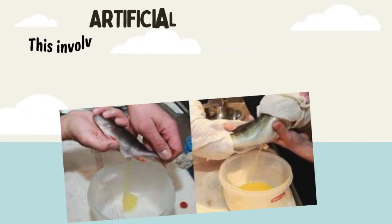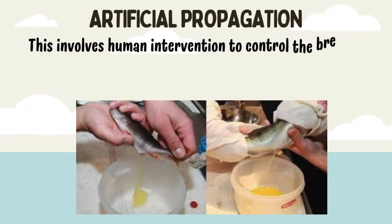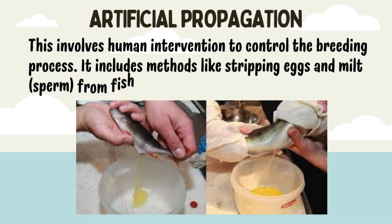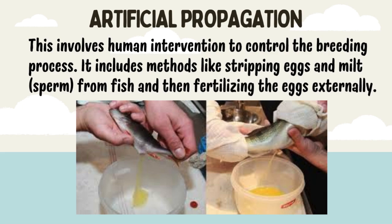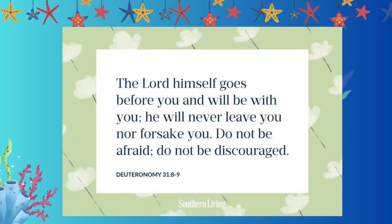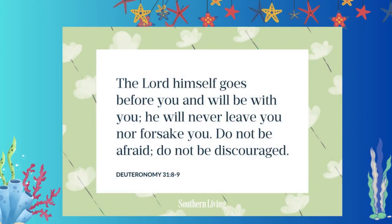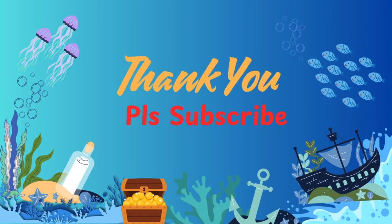Artificial Propagation: this involves human intervention to control the breeding process. It includes methods like stripping eggs and milt from fish and then fertilizing the eggs externally.